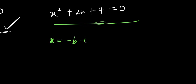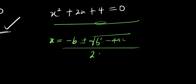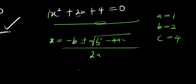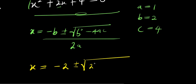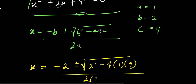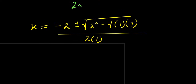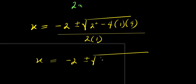We have x equals negative b plus or minus square root of b squared minus 4 times a times c, divided by 2a. Here a equals 1, which is the coefficient of x squared; b equals 2, which is the coefficient of x; and c equals 4. So from here, we have x equals negative 2 plus or minus square root of 2 squared minus 4 times 1 times 4, divided by 2 times 1.